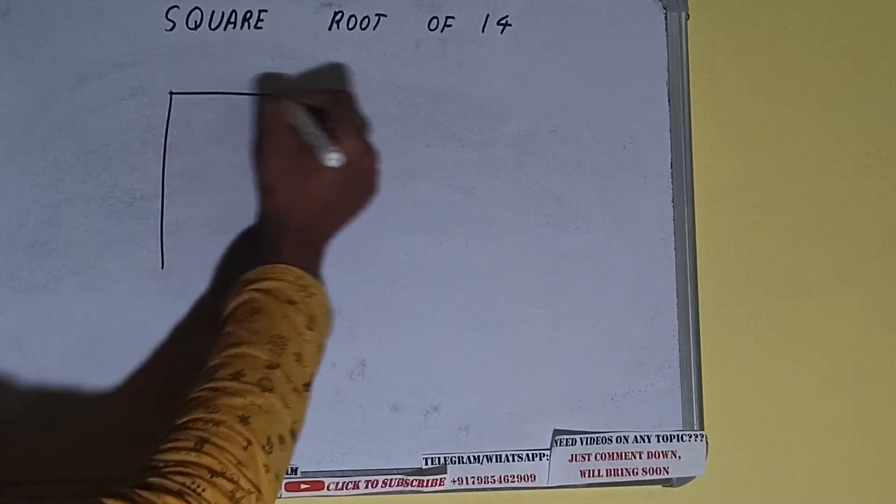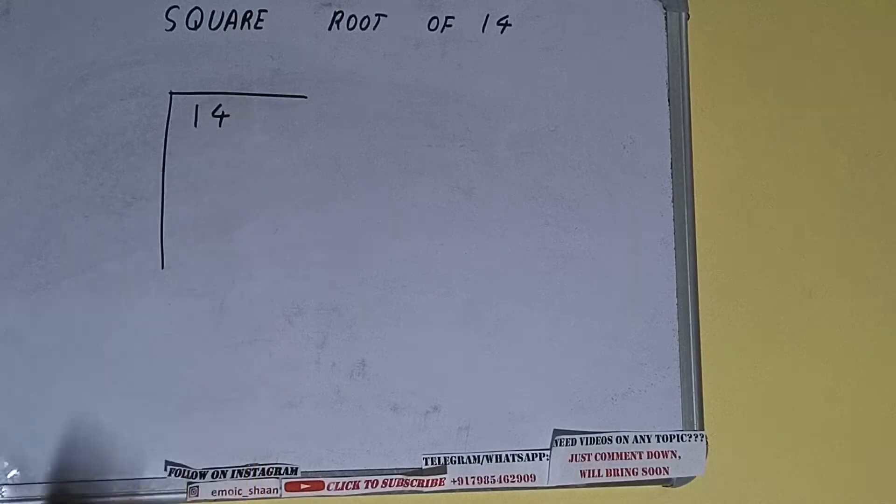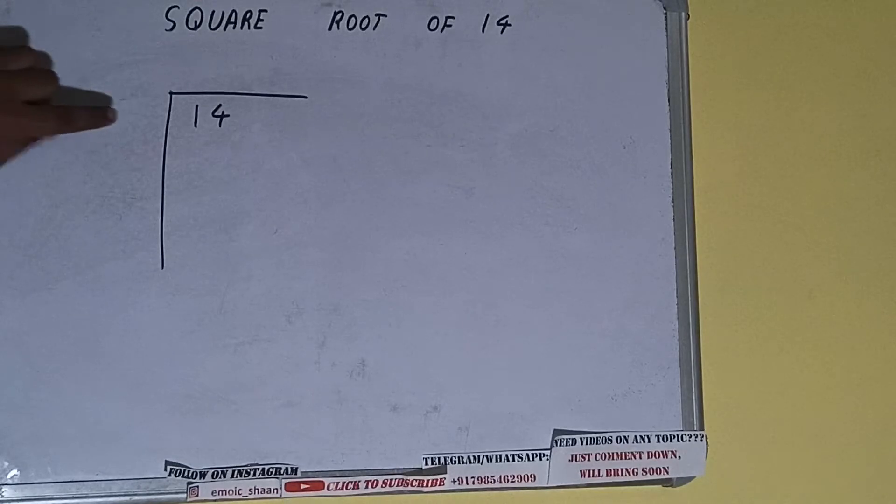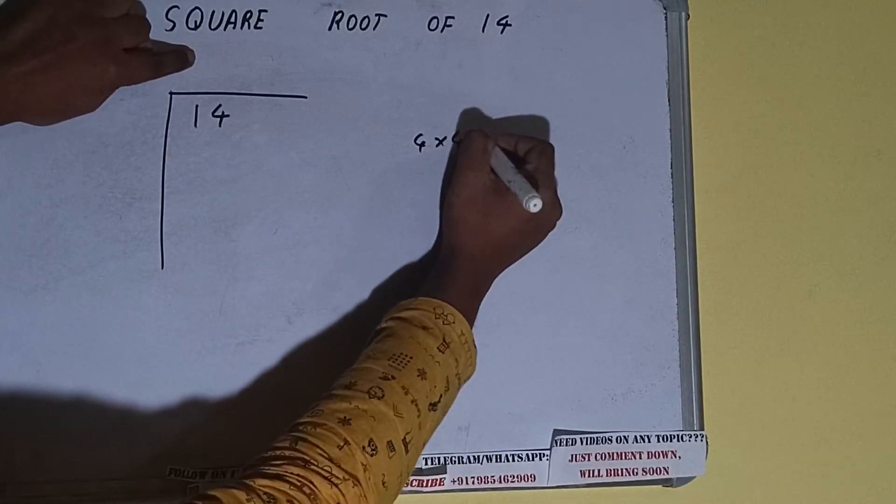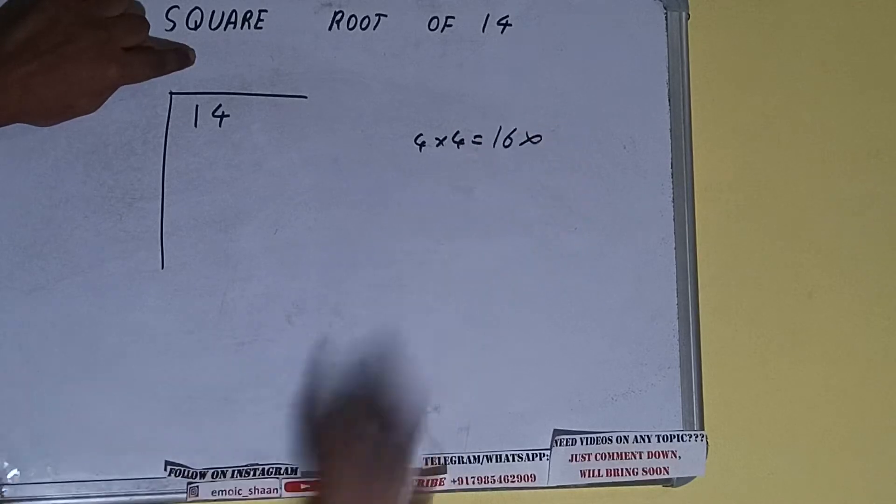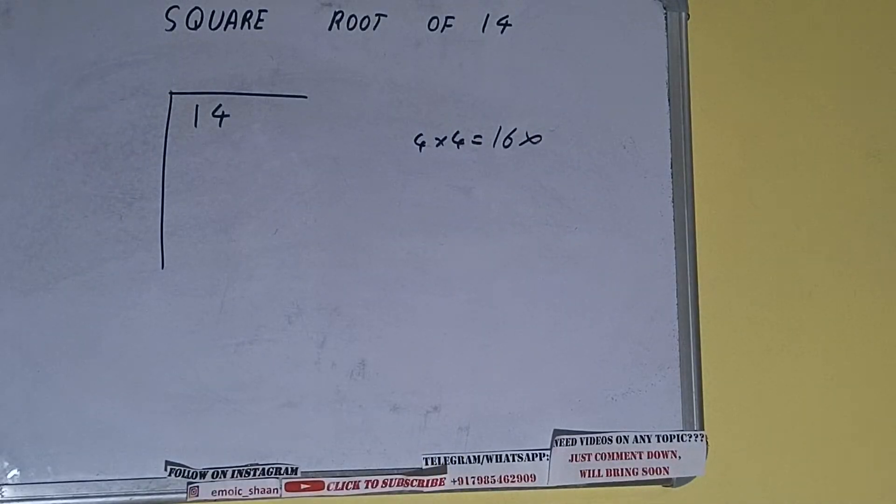First of all, we need to write the number like this. The next thing we need to know is whatever number we write here, we have to write here also. So if we write 4 here and 4 here, we'll be having 16, which is greater than 14, so we cannot use it.